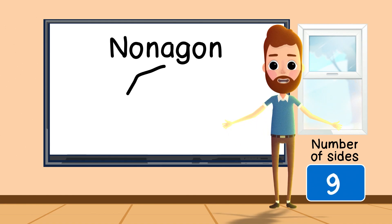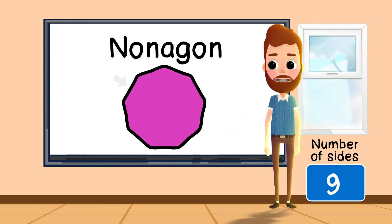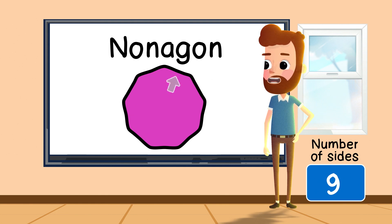A nine-sided shape is called a nonagon. Side one, side two, side three, side four, side five, side six, side seven, side eight, and side nine.